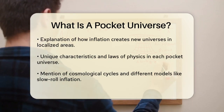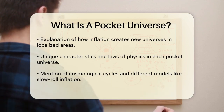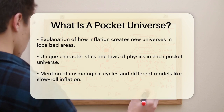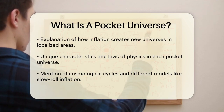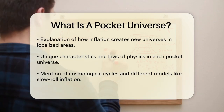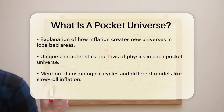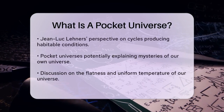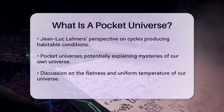Each pocket universe could have its own unique characteristics and laws of physics. For instance, some might undergo cycles of cosmological evolution, while others might follow different models like slow-roll inflation or emergent universe scenarios. Jean-Luc Lehners, an astrophysicist from the Princeton Center for Theoretical Science, suggests that pocket universes which undergo cycles are more likely to produce habitable conditions repeatedly.